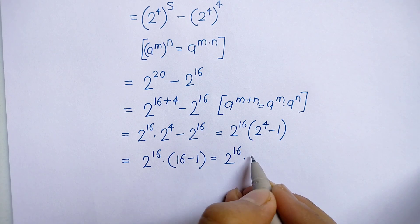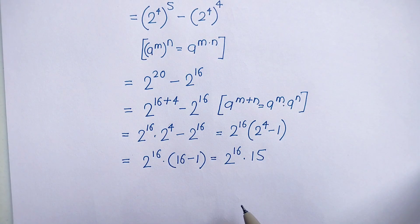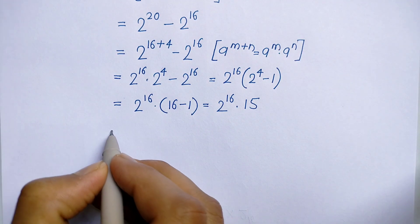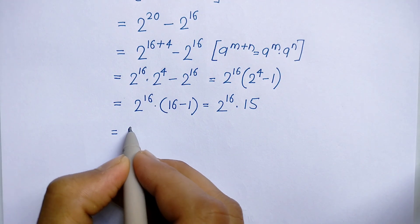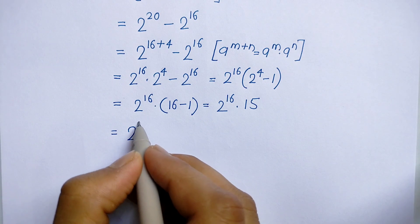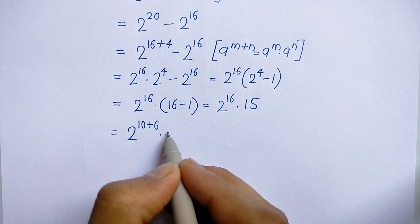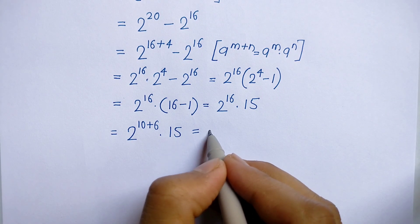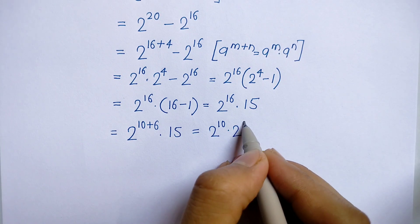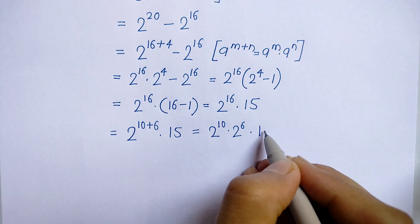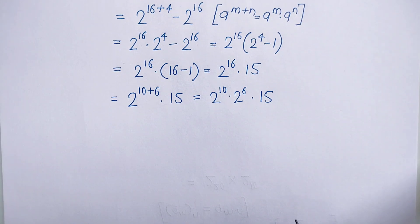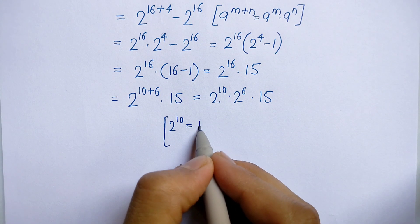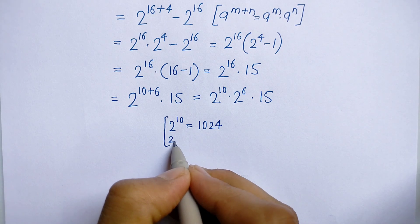So we have 2 to the power 16 into 2 to the power 4, which is 16, minus 1. That gives us 2 to the power 16 into 15. Now we can write 16 as 10 plus 6, so we get 2 to the power 10 into 2 to the power 6, into 15.